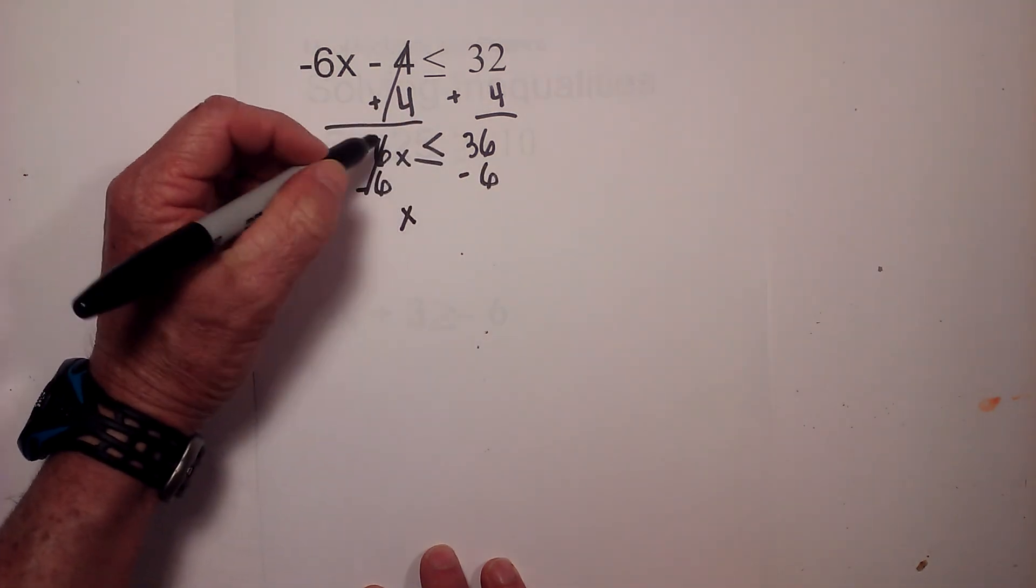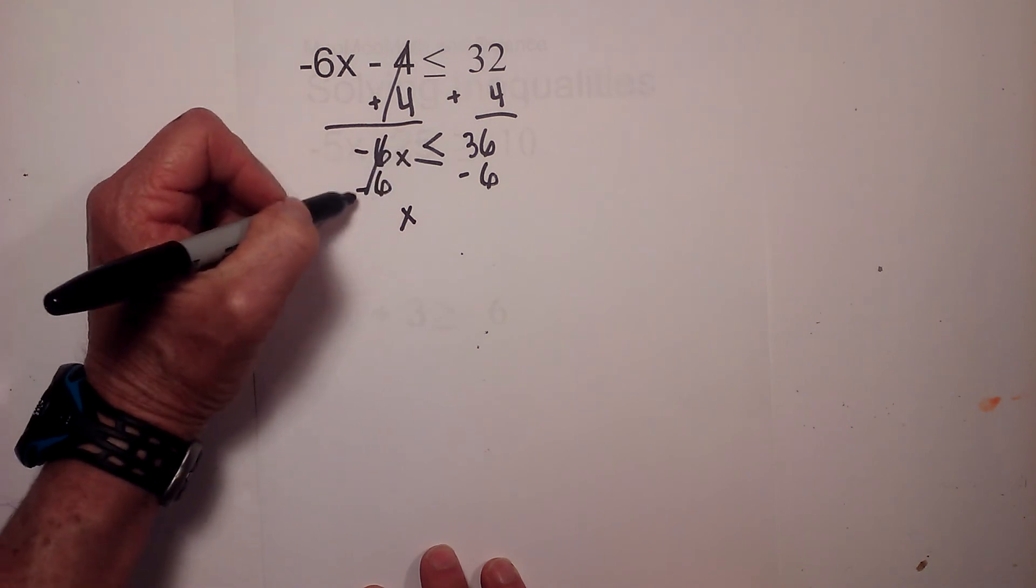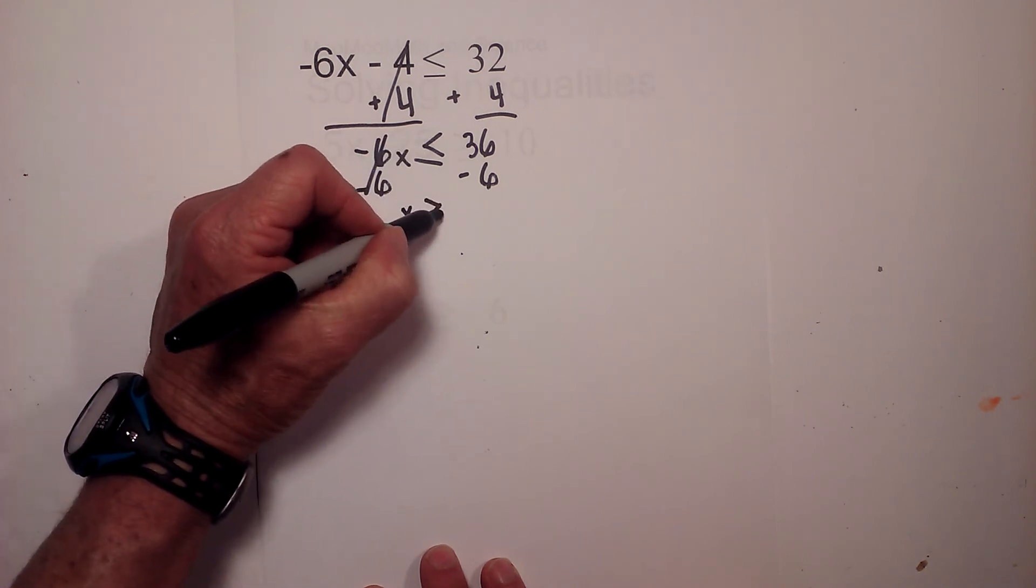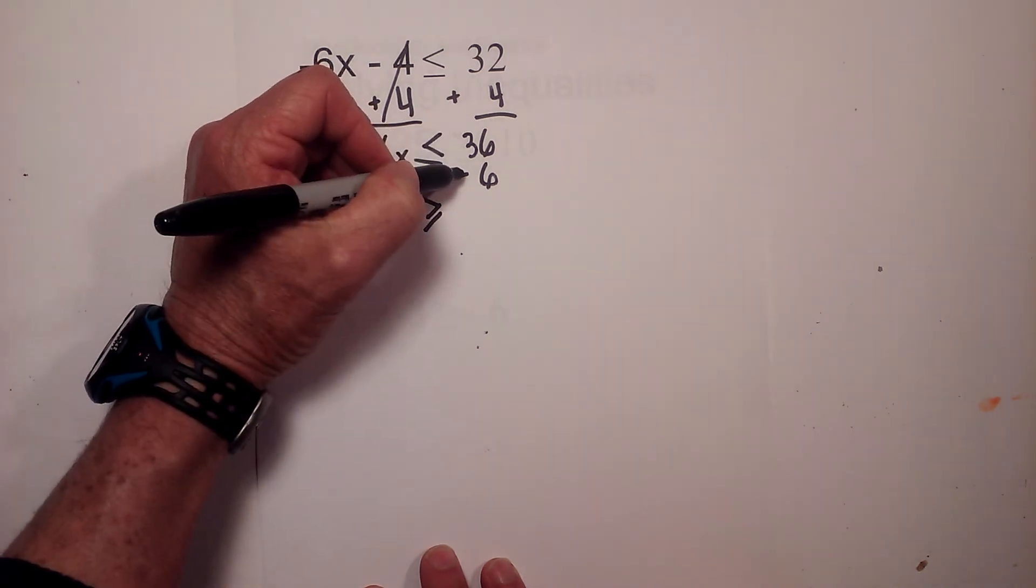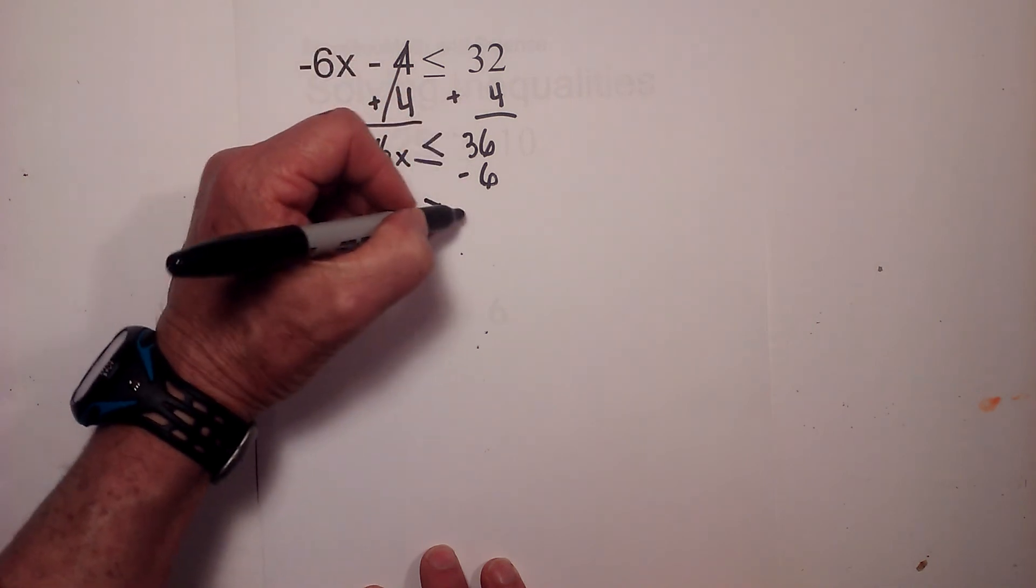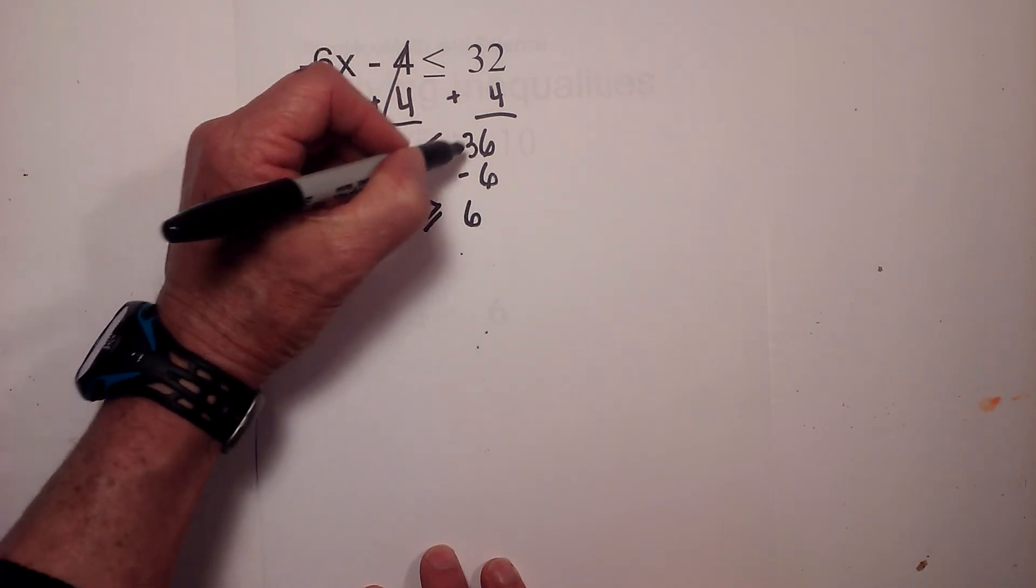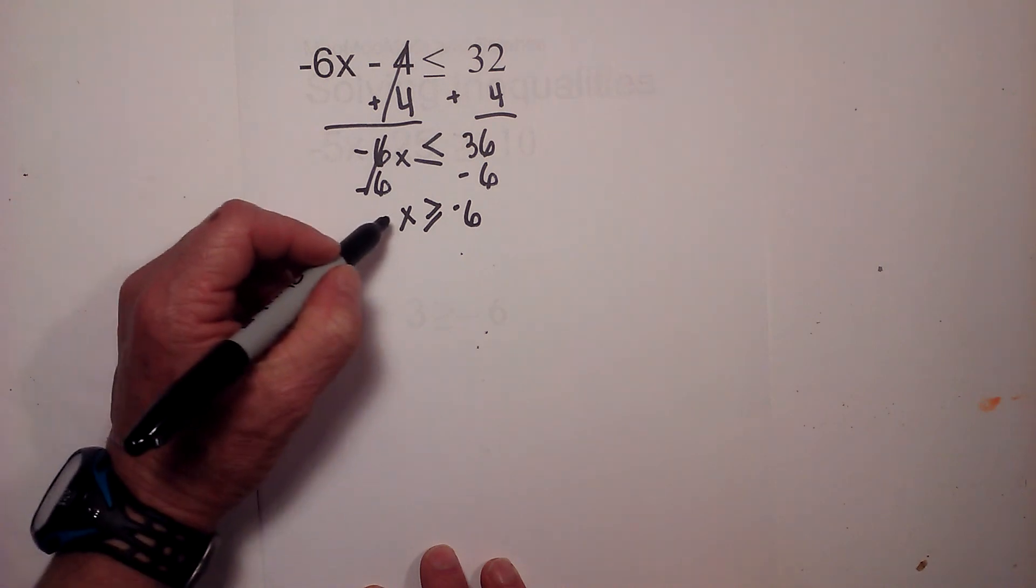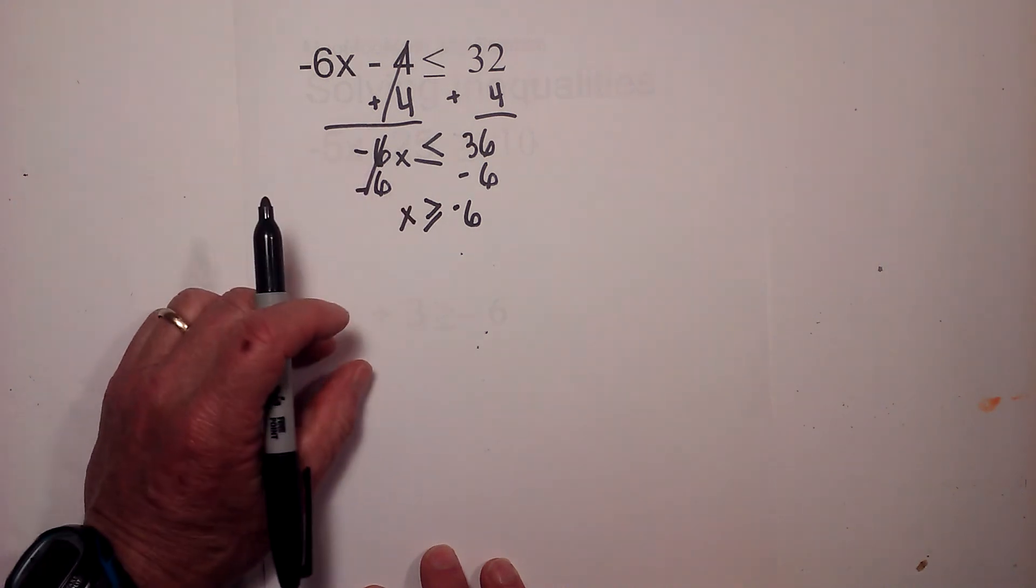Divide each side by negative 6, these cancel, divide by negative 6. Bring down the x, the signs switch because we are dividing by a negative number. 36 divided by negative 6 is 6, and it's going to be a negative number. So it is x is greater than or equal to negative 6.